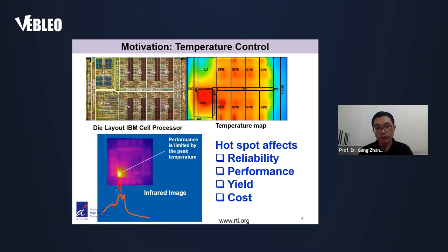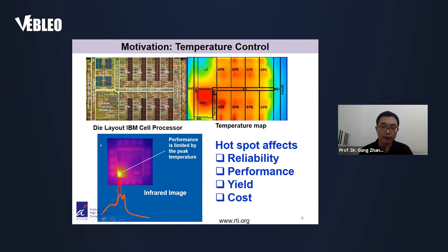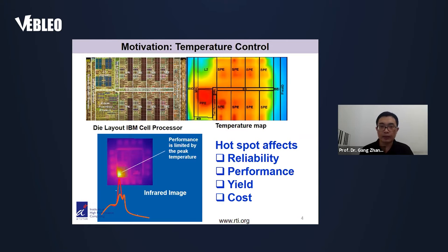Here I show the temperature profile of a real IC device. This is from the IBM cell processor. You can see the average temperature is not very high, but there are many hot spots. The local hot spot is small, and the local temperature is high. The performance of the device is limited by the peak temperature. The hot spots will affect the reliability, performance, cost, and lifetime of the device. So this is why we want to study the thermal control and thermal management of the IC chip.